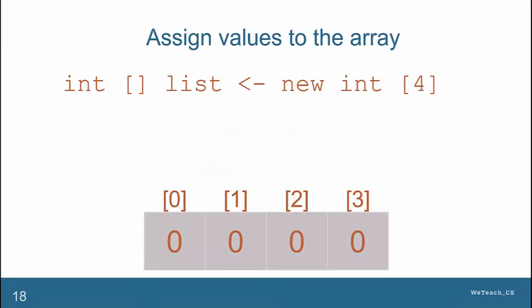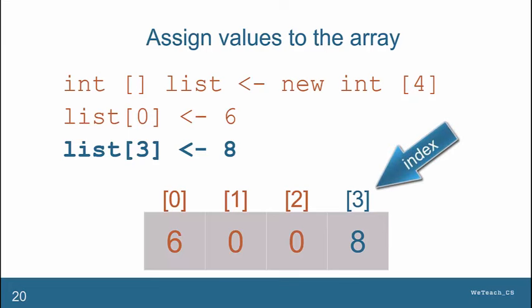To assign a value to a place in an array, you name the array and use the square brackets with the value inside to indicate which position you want to access, and then use an assignment statement to make the change. The value in brackets is called the index.